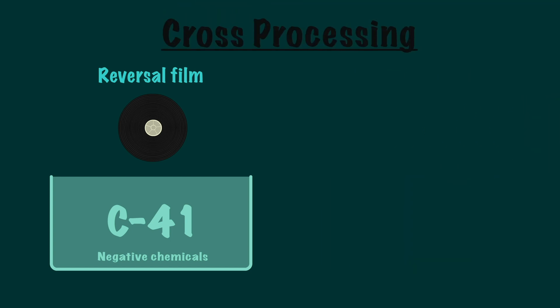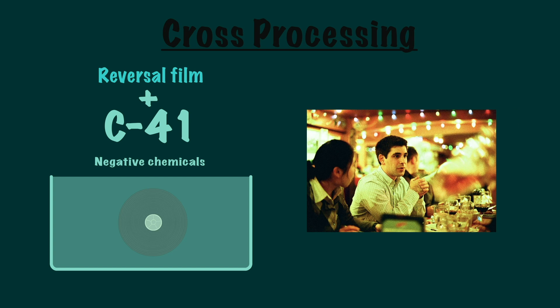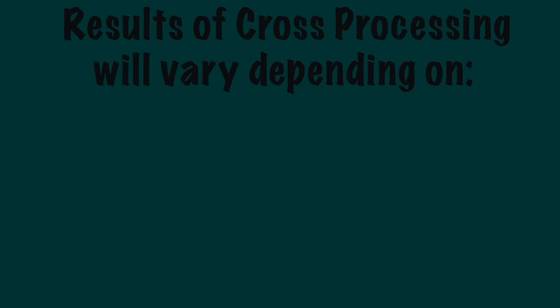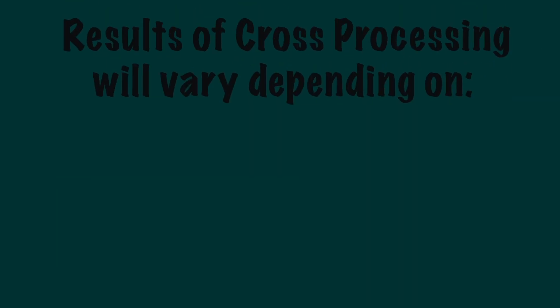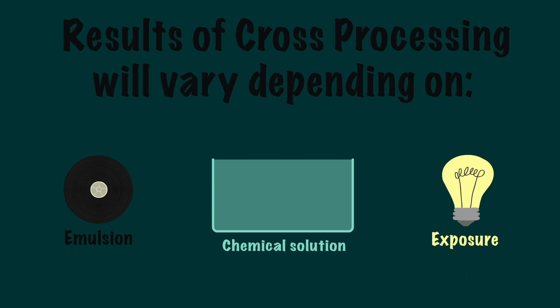For example, if you took reversal film and processed it with negative chemicals, you may get a result similar to this — highly saturated and with a slightly orange base. However, all the results of cross-processing will vary depending on the type of emulsion, chemical solution, and how the film is exposed.